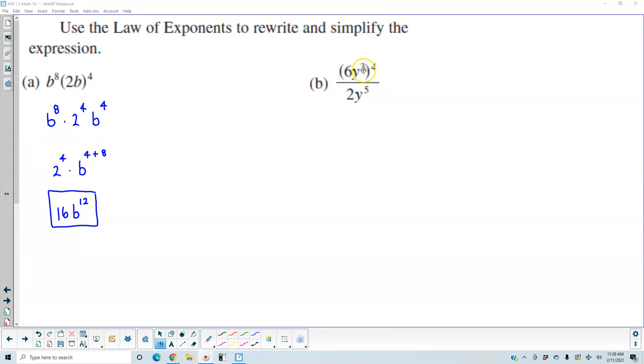For part b we need to look at the base of the exponent rule. So 6 has an exponent of 1. So that's 4 times 1. So that's 6 to the fourth times y to the 3 times 4 over 2y to the fifth.